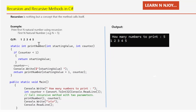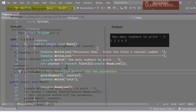The method will execute until the counter is less than one. For example, if the user enters 5, it is going to print 1, 2, 3, 4, 5 because the counter gets decremented by one each time. Once the condition is met — counter less than or equal to one — it returns the final starting value. The recursive method gets called five times and prints 1, 2, 3, 4, 5.